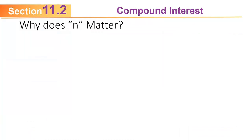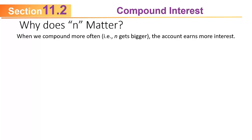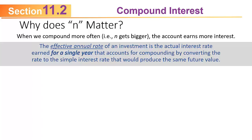The new variable in the compound interest formula is n. Why does n matter? When we compound more often — n gets larger, from annually to semiannually to quarterly and so on — the account earns more interest. The effective annual rate of an investment is the actual interest rate earned for a single year that accounts for compounding, by converting the rate to the simple interest rate that would produce the same future value. This lets you fairly compare a quarterly rate to a daily rate or any two different compounding periods.